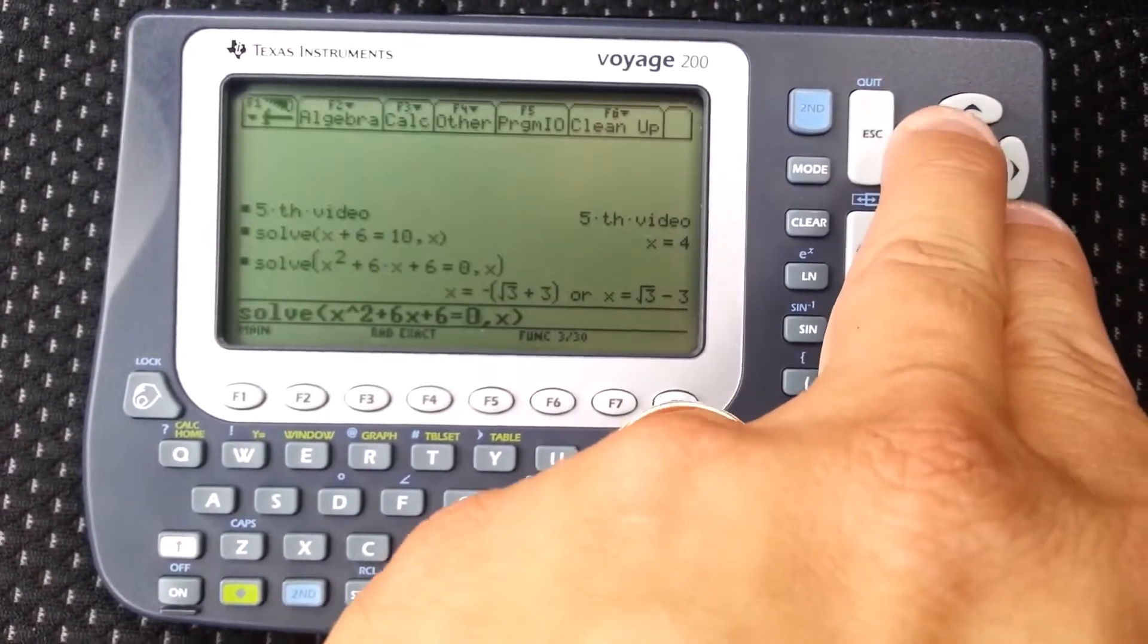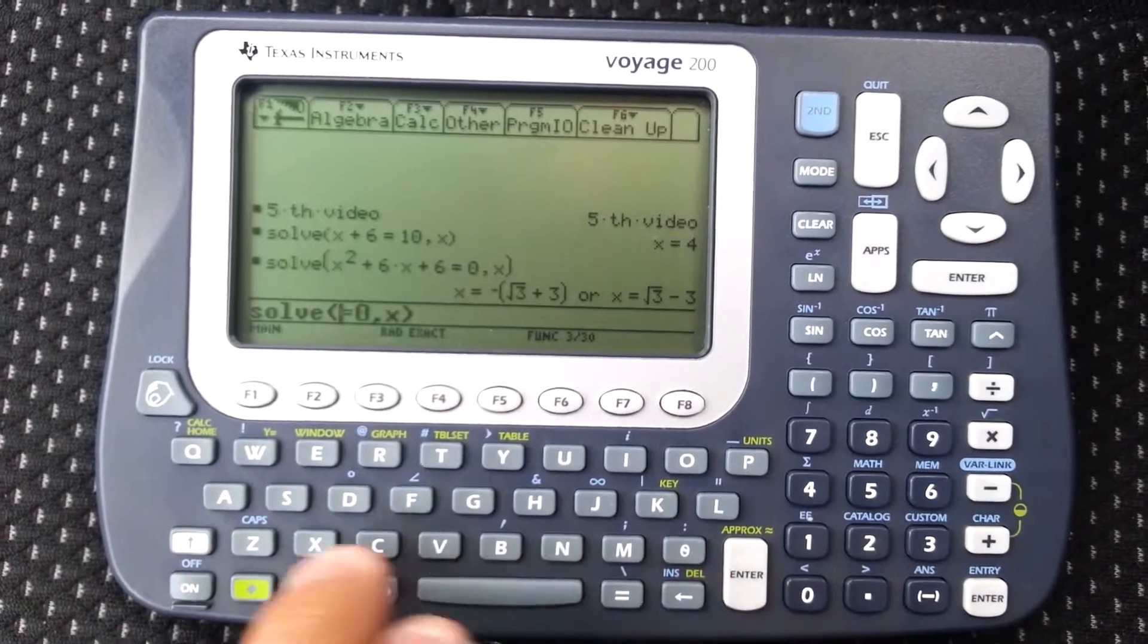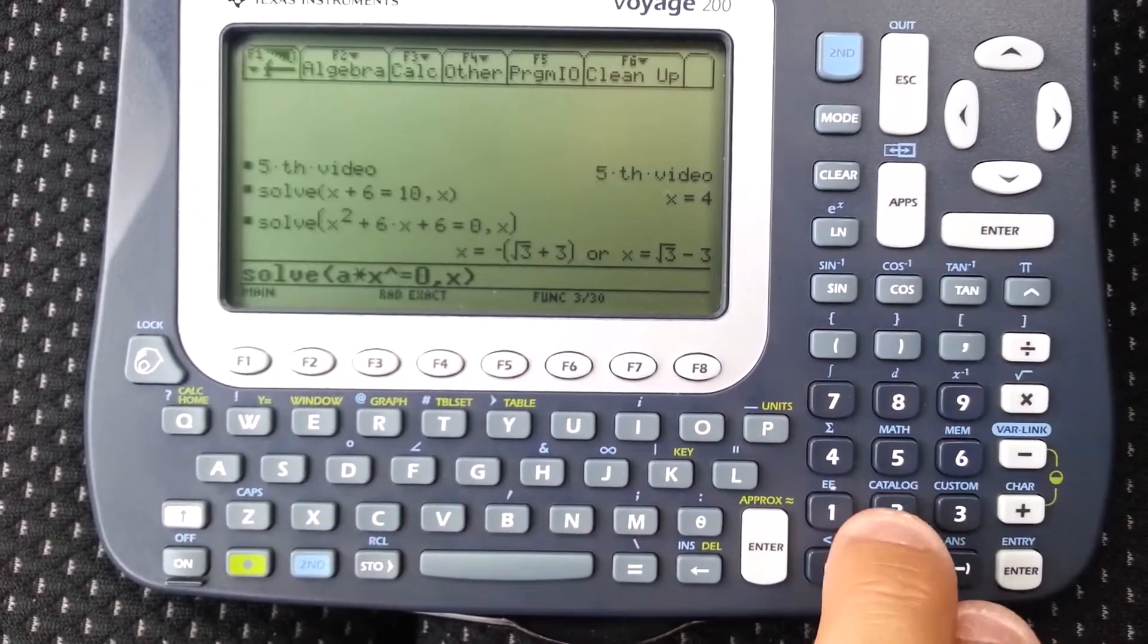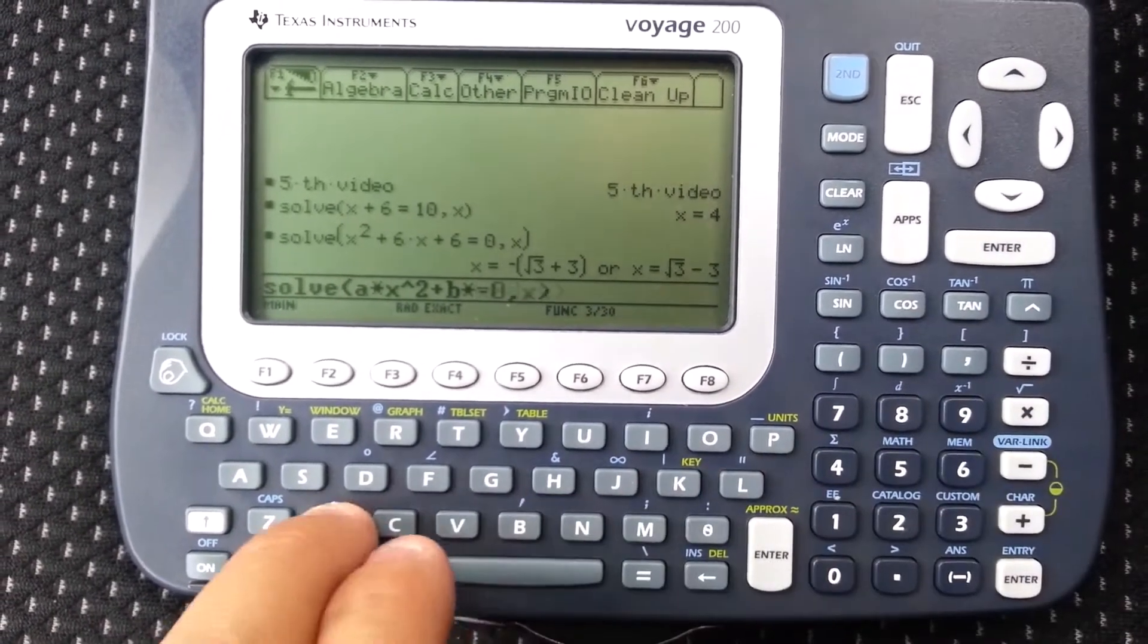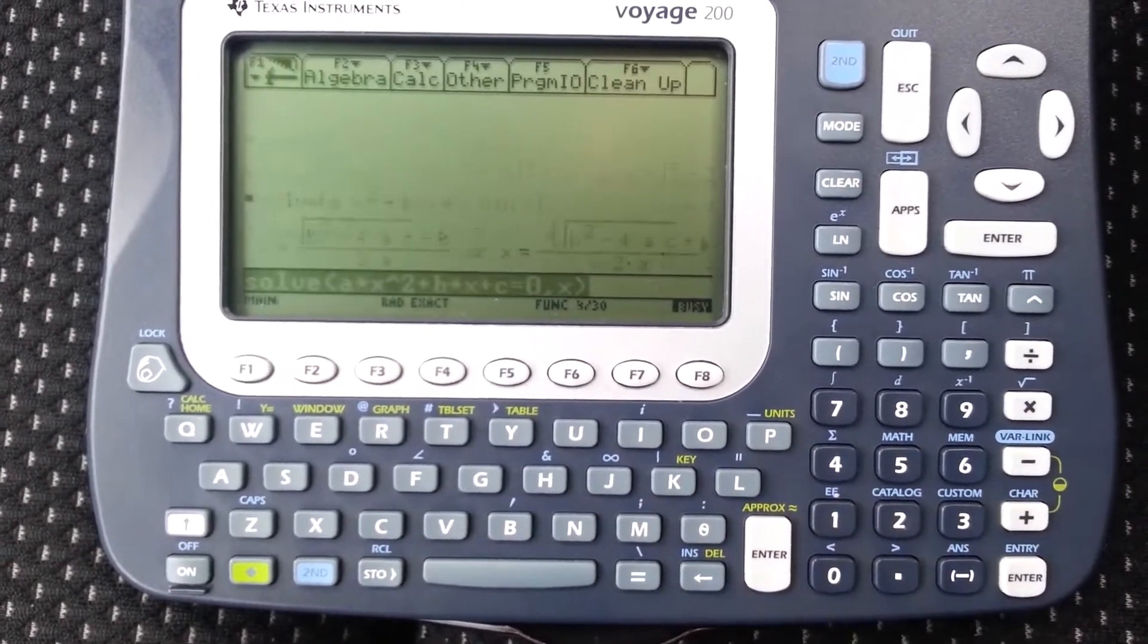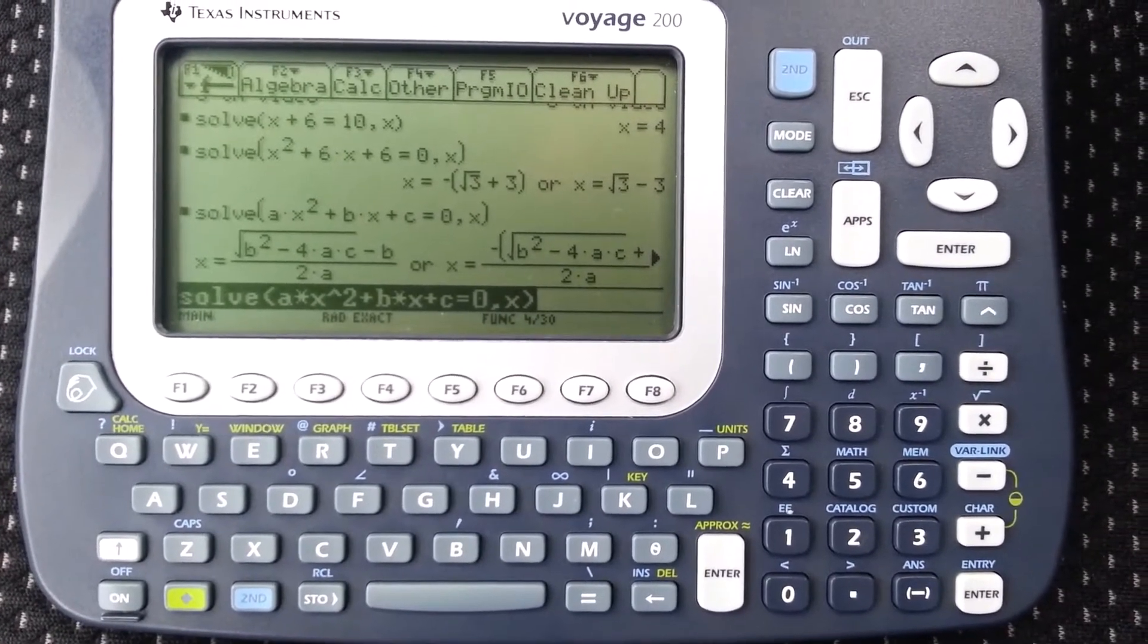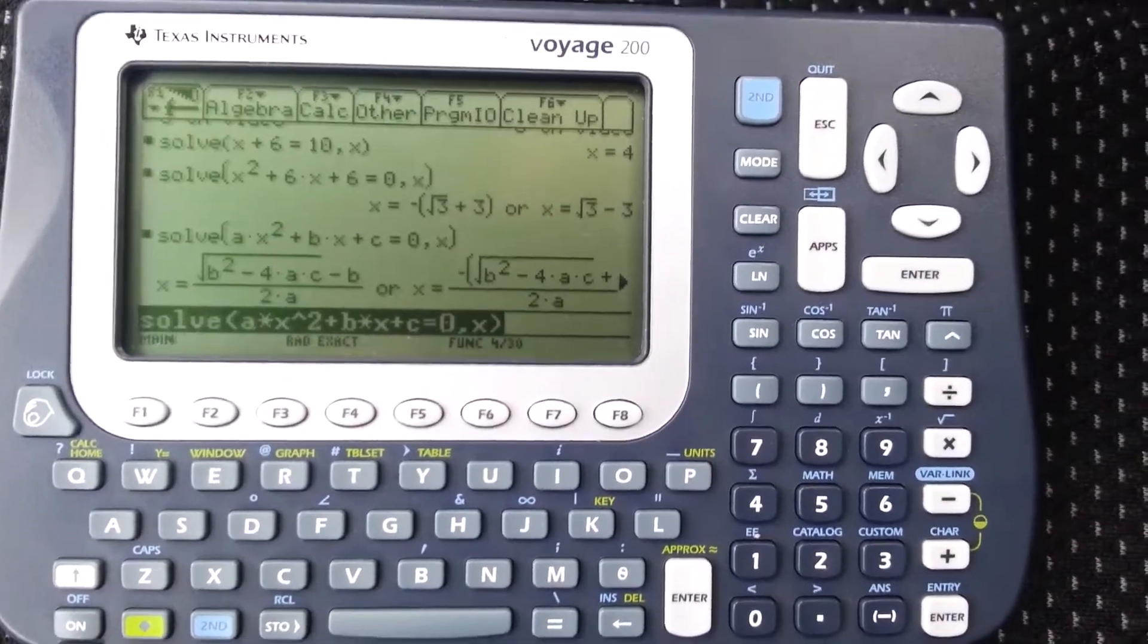Now you can also do symbolic manipulation a times x squared plus b times x plus c equals zero and solve for x. And it will give you the answer generic, the familiar negative b plus or minus square root of b squared minus 4ac divided by 2a.